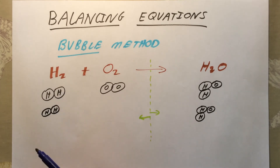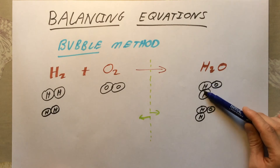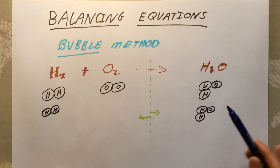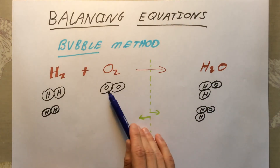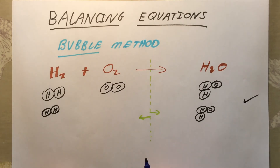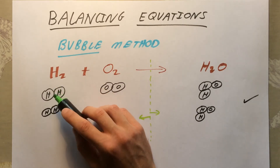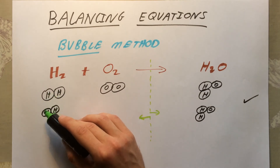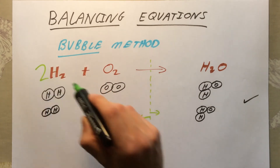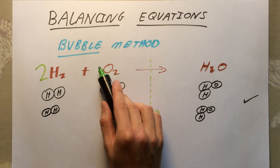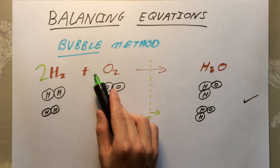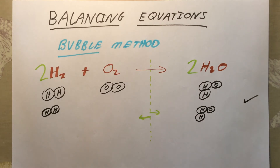Now we've got two oxygen atoms on both sides, so oxygens are balanced. However, by adding another lot of water, we've also changed the number of hydrogens — now there are four hydrogen atoms on the right but only two on the left. So we need to double up the hydrogen as well. Now we've got four hydrogens and two oxygens on each side — the equation is balanced. We count up: two lots of H₂, one lot of O₂, and two lots of H₂O.